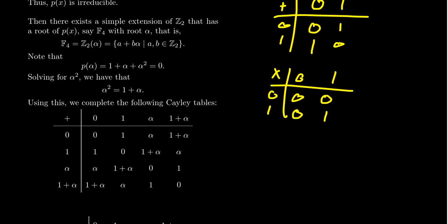Since by construction α is a root of p(x), that means 1+α+α²=0. It equals zero because we created a root — we added it to our field — and so it must satisfy this algebraic relationship: 1+α+α²=0.